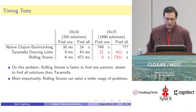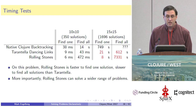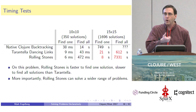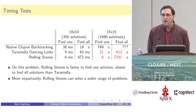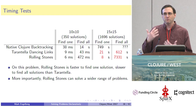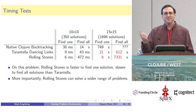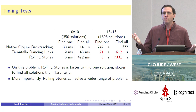Looking at the timing tests, you can see that for the 15 by 15 results, if you're looking for just one solution, Rolling Stones actually beat Dancing Links in this particular case — a testament to how good the heuristics are built into SAT solvers for quickly zoning in on the combination of true variables. But when you try to find all solutions, it's a different story: Dancing Links clearly outperforms Rolling Stones. When you're making choices and then backtracking over and over again, it's really hard to beat that mutable circular doubly linked list data structure that Knuth came up with.